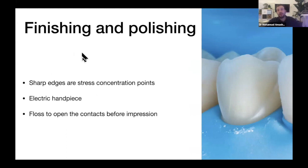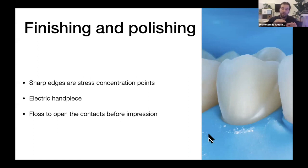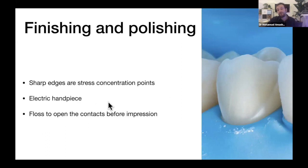Finishing and polishing: any sharp edges are stress concentration points. You want the preparation to look almost like melting wax — everything needs smooth transitions, which reduces concentration points, makes the lab casts easier to work with, and just looks good. Use an electric handpiece for finishing and polishing. Air-powered handpieces are good for cutting but don't give you controlled rotation. The electric handpiece gives you much better control over your preparation — it's not very expensive and is really worth getting.